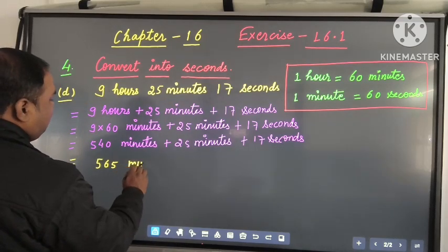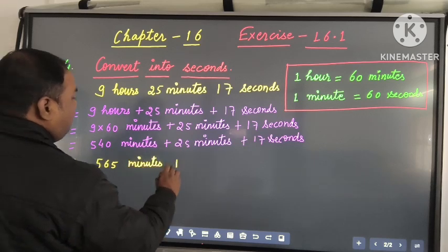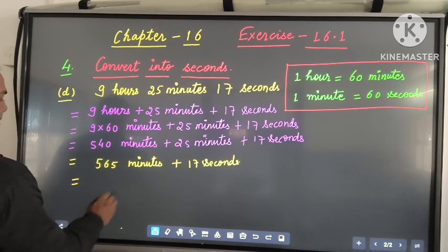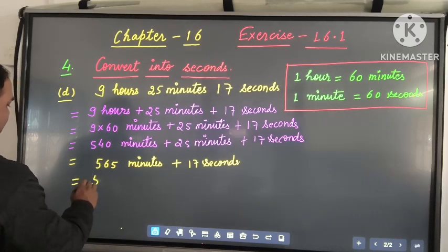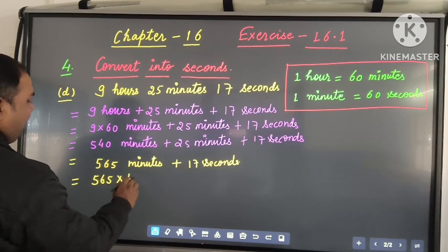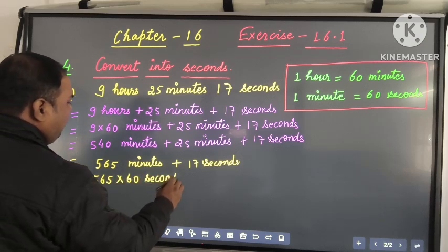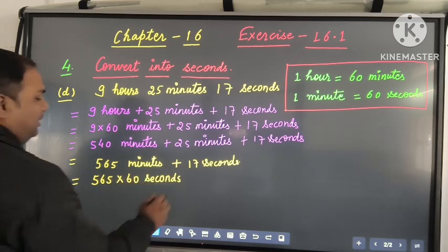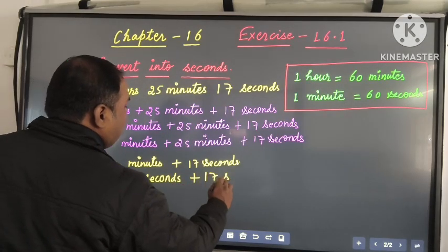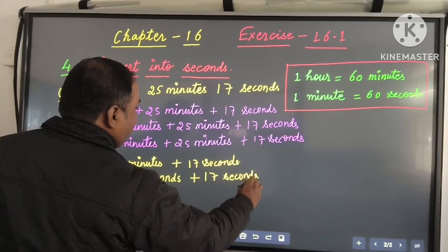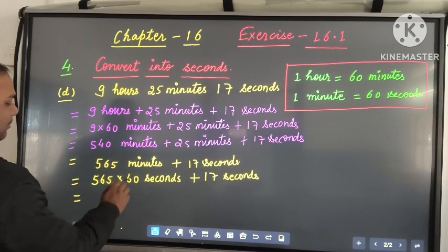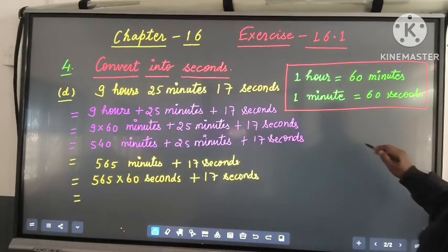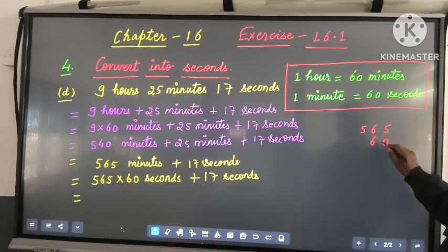So we have 565 minutes plus 17 seconds. Then we will convert the minutes into seconds. So 565 multiplied by 60 seconds, because 1 minute is equal to 60 seconds. So 565 minutes is 565 multiplied by 60 seconds, plus 17 seconds. Let us multiply 565 by 60.